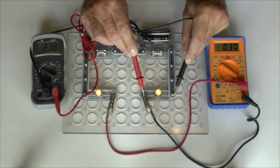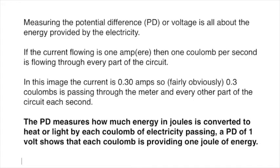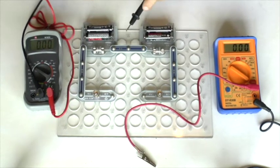The potential difference as being measured here by the grey meter is the difference in energy level between one side of a component and the other, the change in the energy level. The potential difference measures how much energy in joules is converted to heat or light by each bulb.